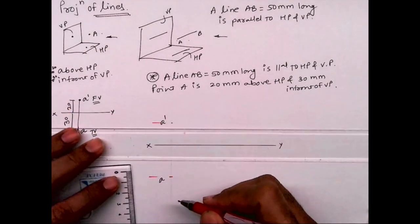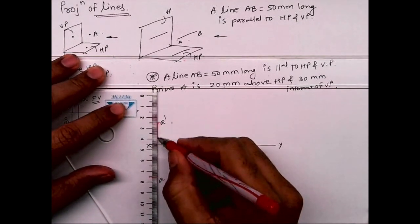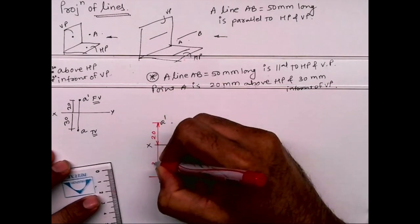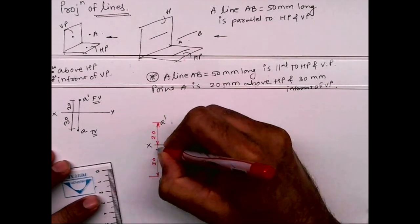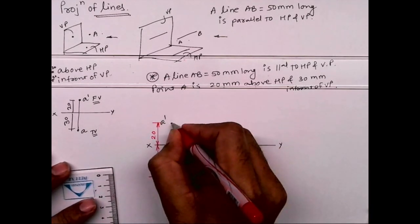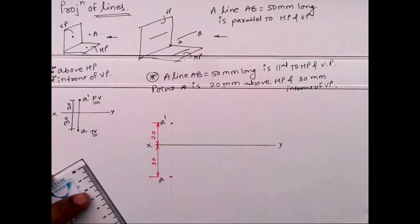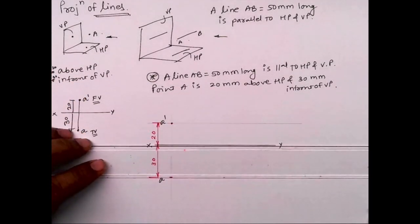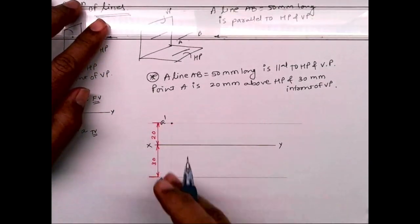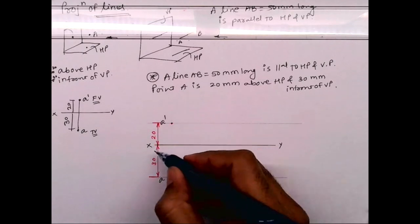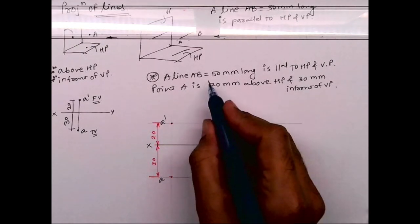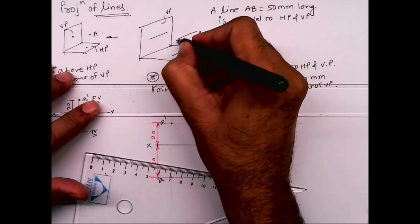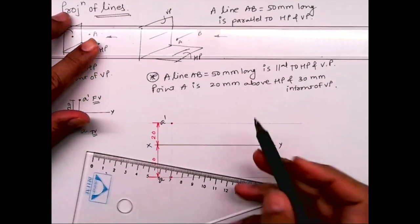So you've got point A dash and A. A dash is front view, A is top view of point A. So if you see, when I'm solving lines what I'm doing is drawing points first. I'm marking point A dash and A first. Now length is how much? 50. So AB is 50, right? So from A dash I can draw 50 mm horizontal line. See this, we have done A dash and A.